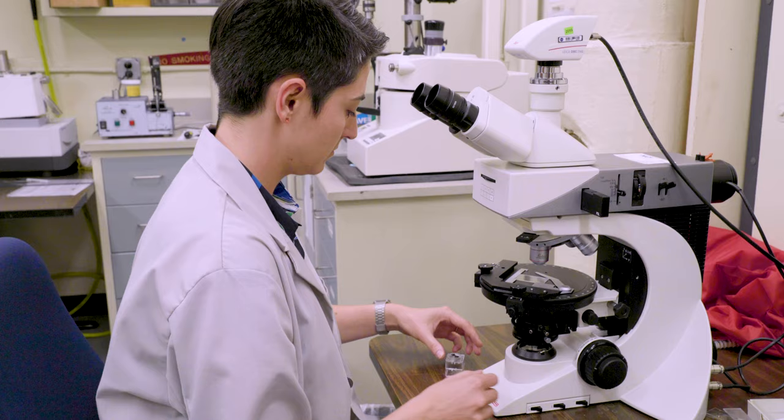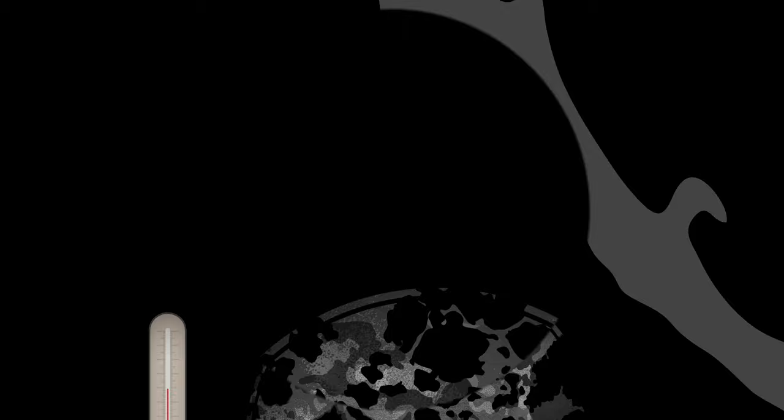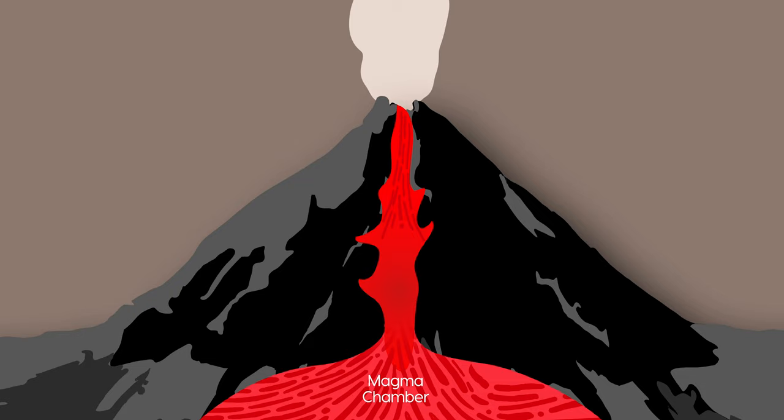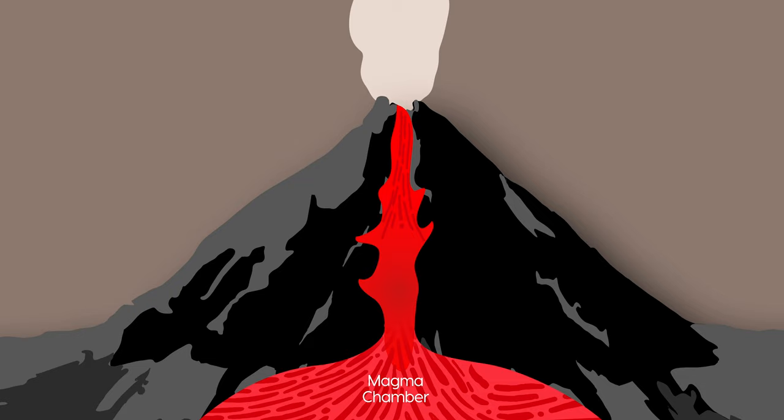We can understand how the rock changes if we increase our pressure and decrease our temperature. If we can build our road map in pressure and temperature space of where we think those rocks came from, that allows us to tell the story of the volcano and of the plumbing system and where a magma chamber is.